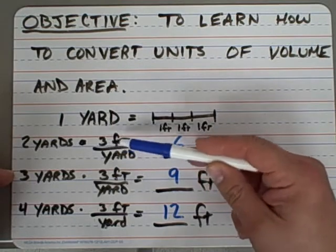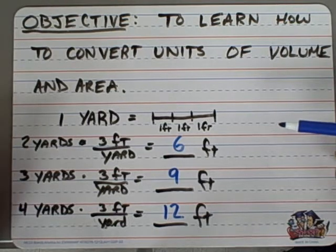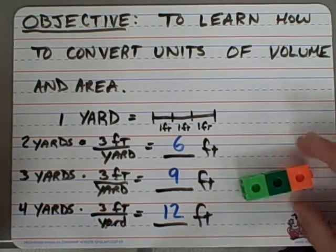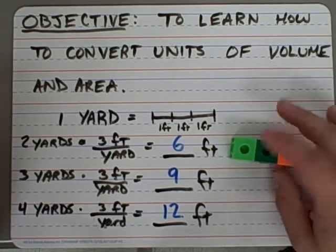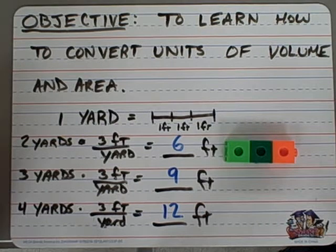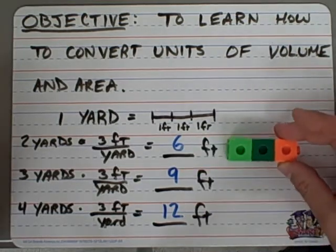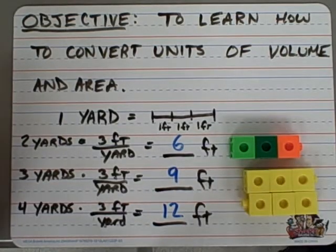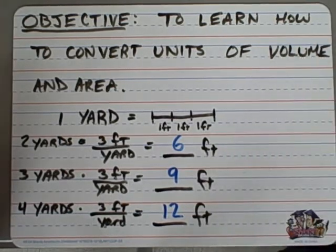It would be nice if we could use that same conversion of 3 feet per yard, but when it comes to volume and area, there's a little bit of a problem with that. And that comes down to looking at it a little differently here. Here, let's say this is a straight line, 3 units. Each one of these little squares here is actually 1 foot.